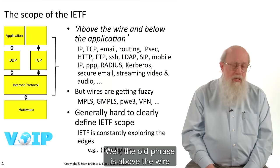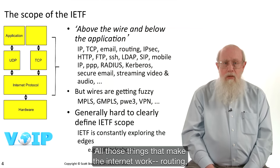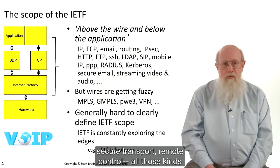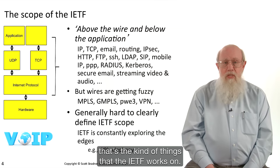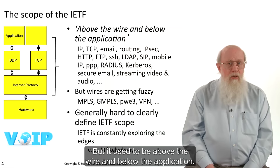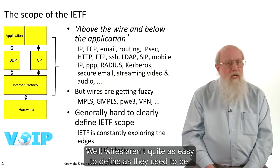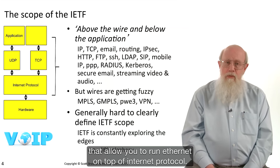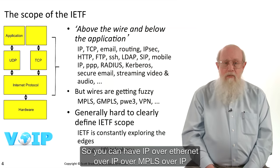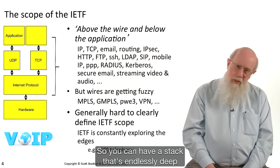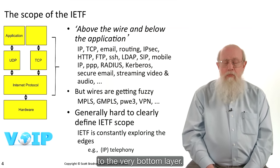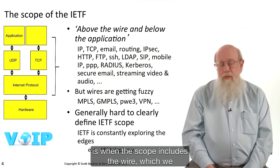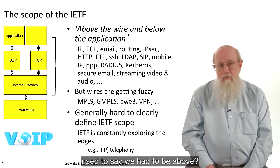What's the scope of the IETF? The old phrase is 'above the wire and below the application' — all those things that make the Internet work: routing, secure transport, remote control, streaming audio, streaming video. But wires aren't quite as easy to define as they used to be. Right now the IETF has standards that allow you to run Ethernet on top of Internet protocol, so you can have IP over Ethernet over IP over MPLS over IP over SONET over IP — a stack that's endlessly deep. It's all software; there's no hardware until you get down to the very bottom layer.